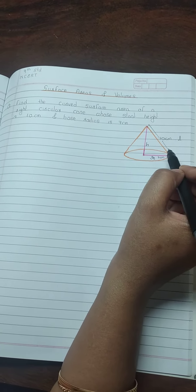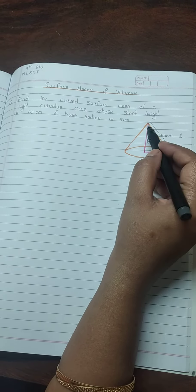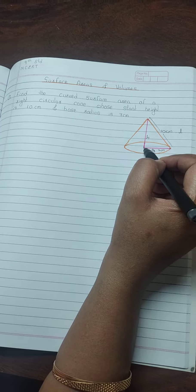This is the diagram of a cone. This is slant height, this is base radius, and this is perpendicular height.